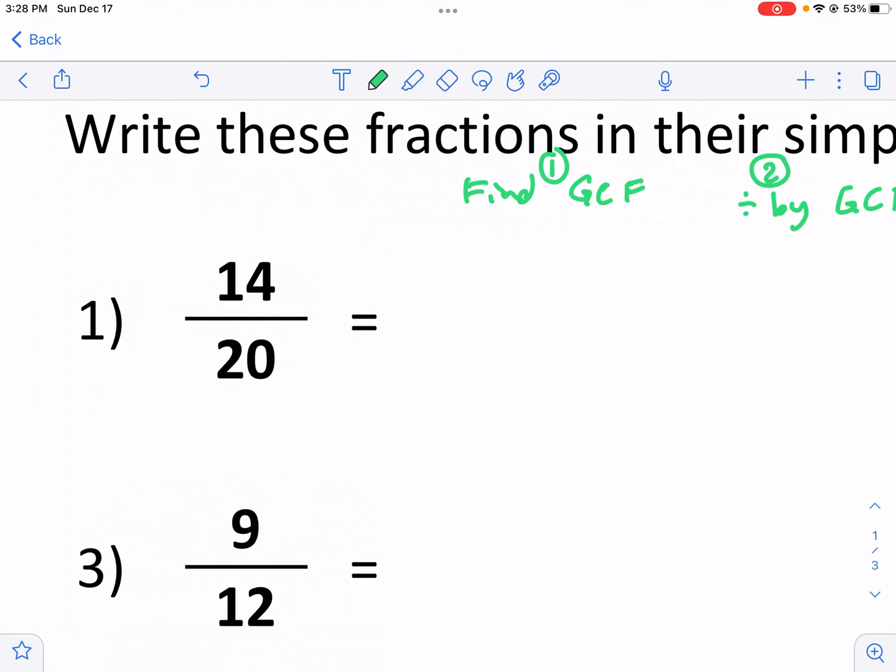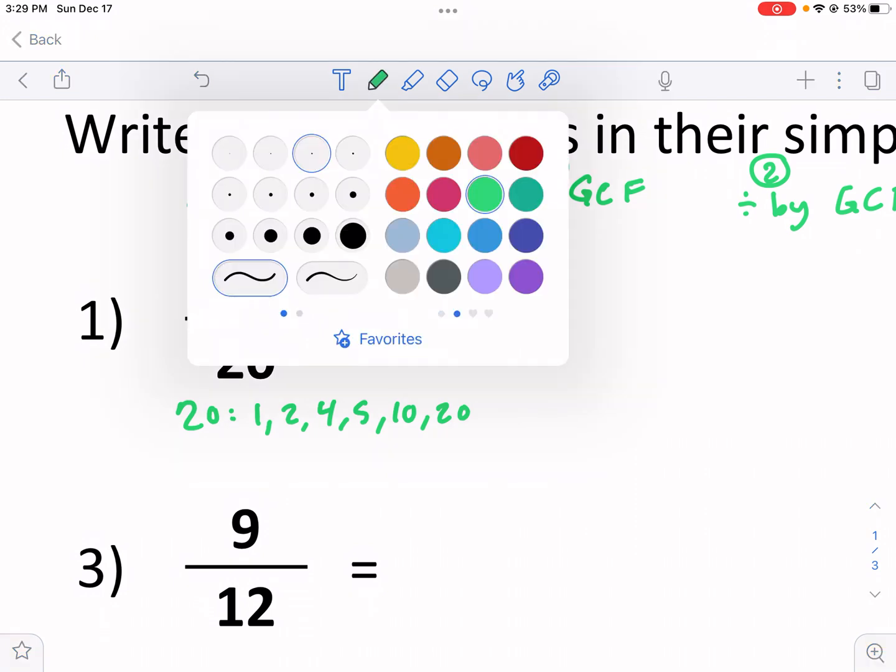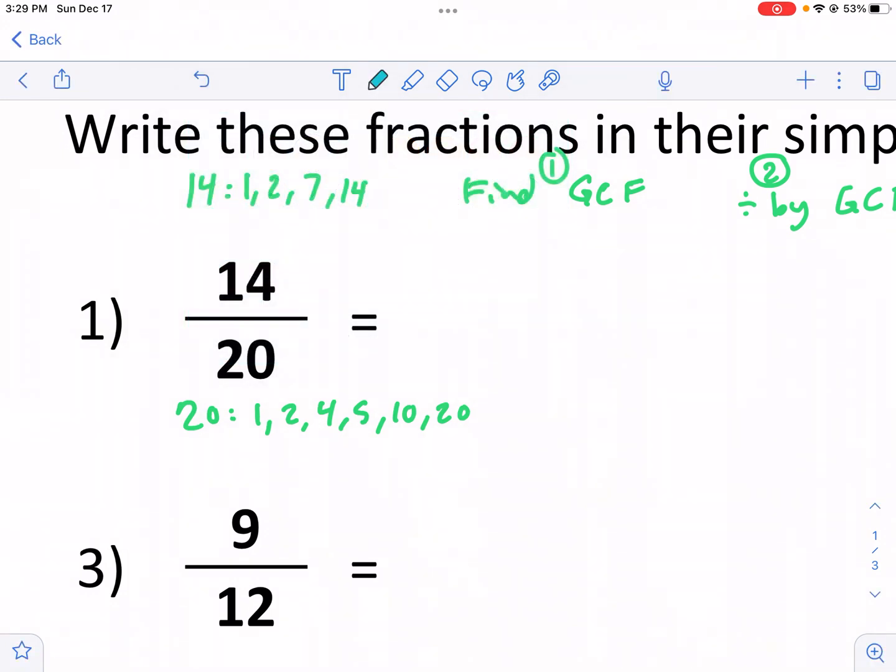But first, let's go ahead and start with this. If I want to list the factors of 14, I'm just going to list it in list form this time, so that's 1, 2, 7, and 14. For 21, it's going to be 1, 2, this one has a lot more, 4, 5, 10, and 20. You can see here, we're going to look for the GCF, the greatest factor of these. In this case, it's going to be two.